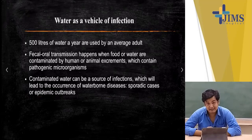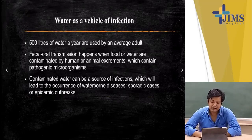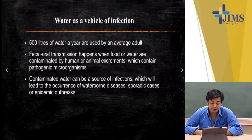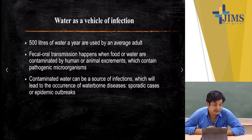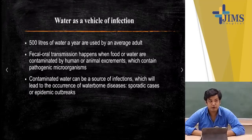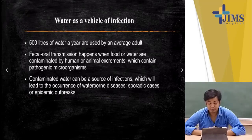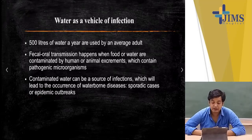How can food get contaminated? Because the contaminated water is being used to prepare foods, and hence the food is also getting contaminated. Contaminated water can be a source of infection which will lead to waterborne diseases, sporadic cases or epidemic outbreaks. Water as a vehicle of infection is very important for your exam questions — in your semester, professional exams, and even in your viva.